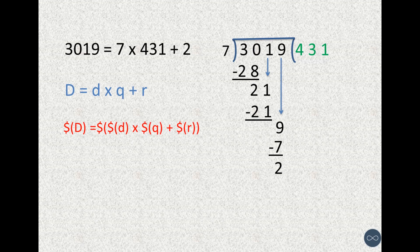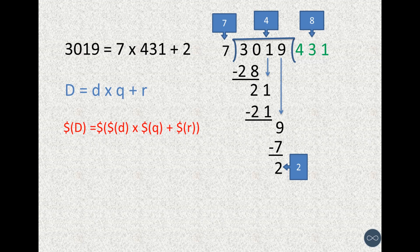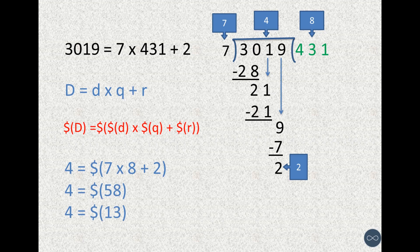So, taking their seeds, the seed of 3019 that is 4 is equal to the seed of 7 times 8 plus 2, which would be the seed of 58, which would give us a seed of 13, and finally 4 is equal to 4.